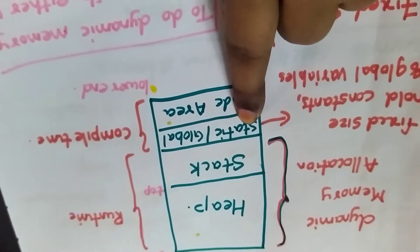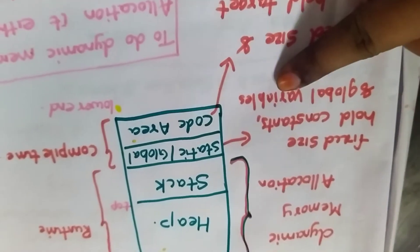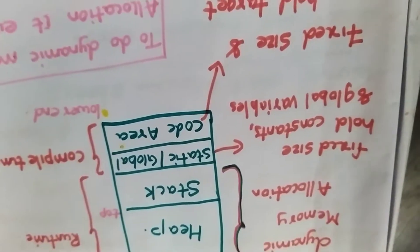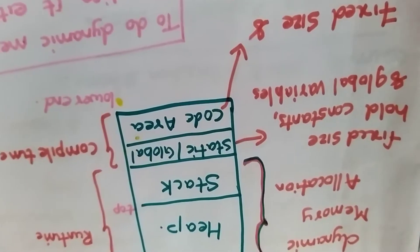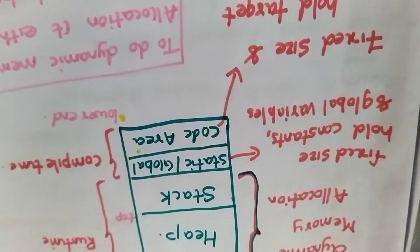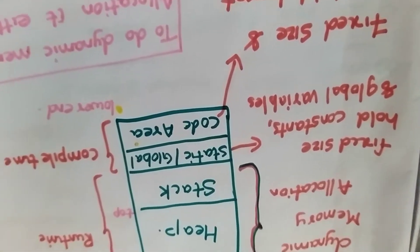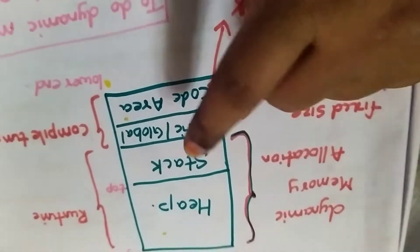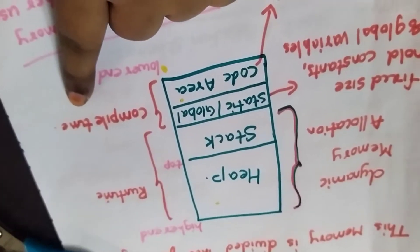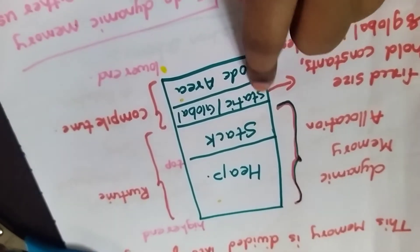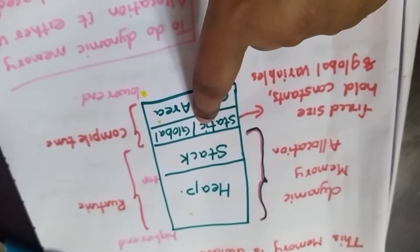Then comes the static or global variable part, which is again of fixed size and holds the constants and the global variables. Constants have a fixed size and value; global variables similarly don't tend to change during the program — they are declared before and remain throughout. These two parts — code area and static/global variables — are collectively managed during compile time.